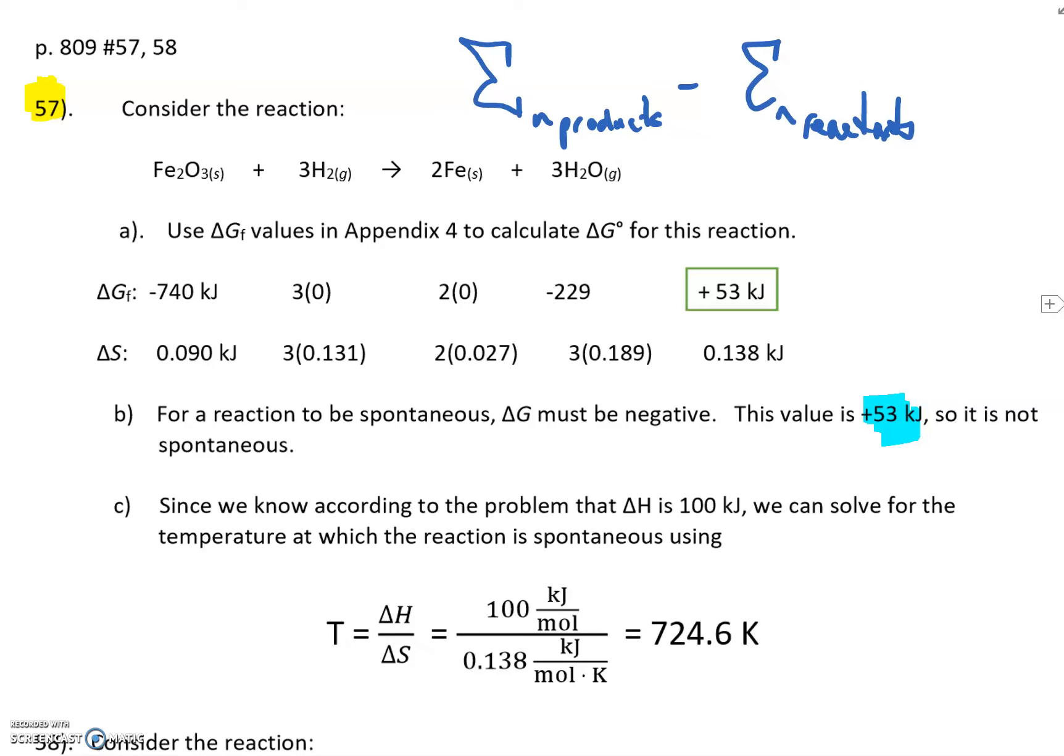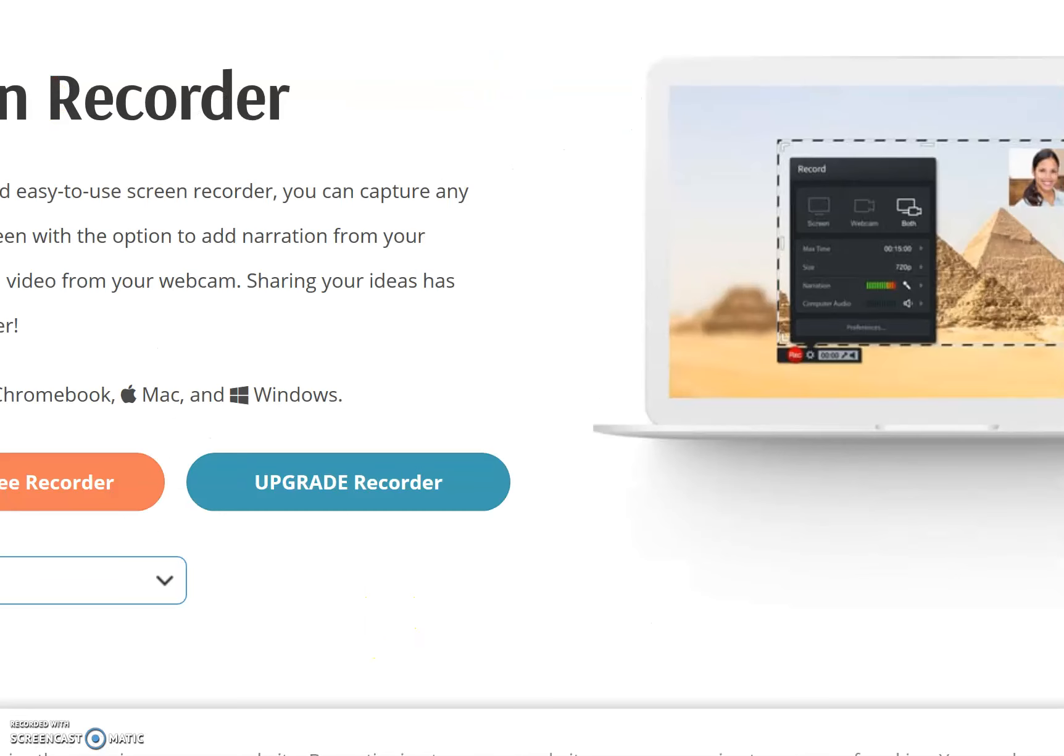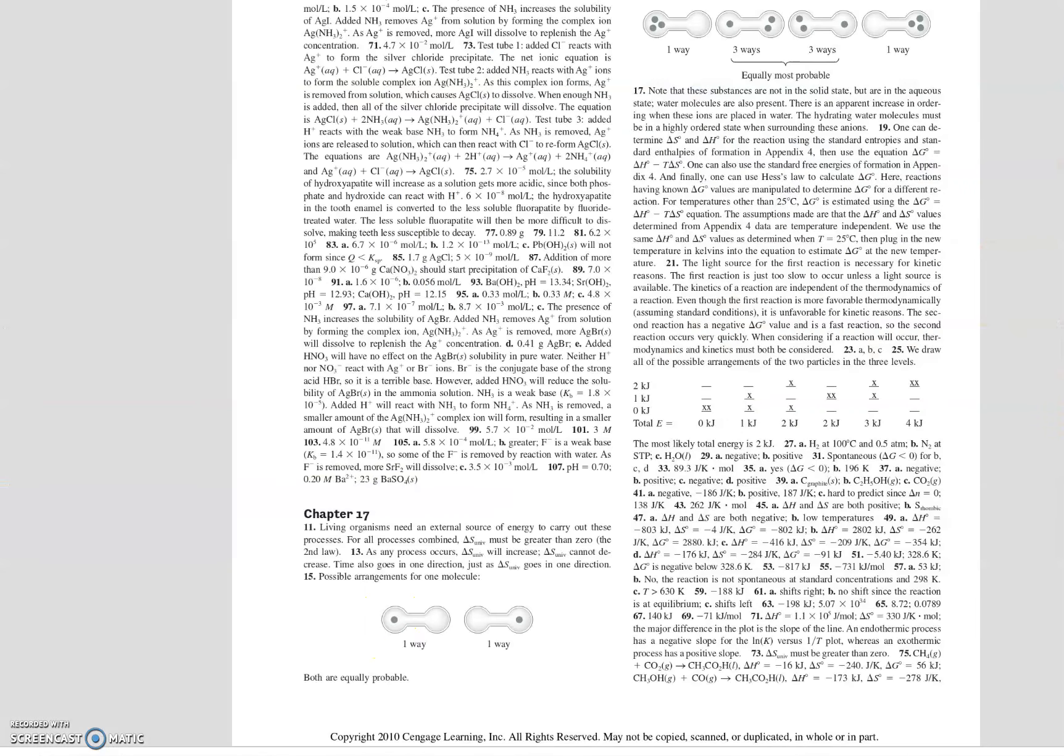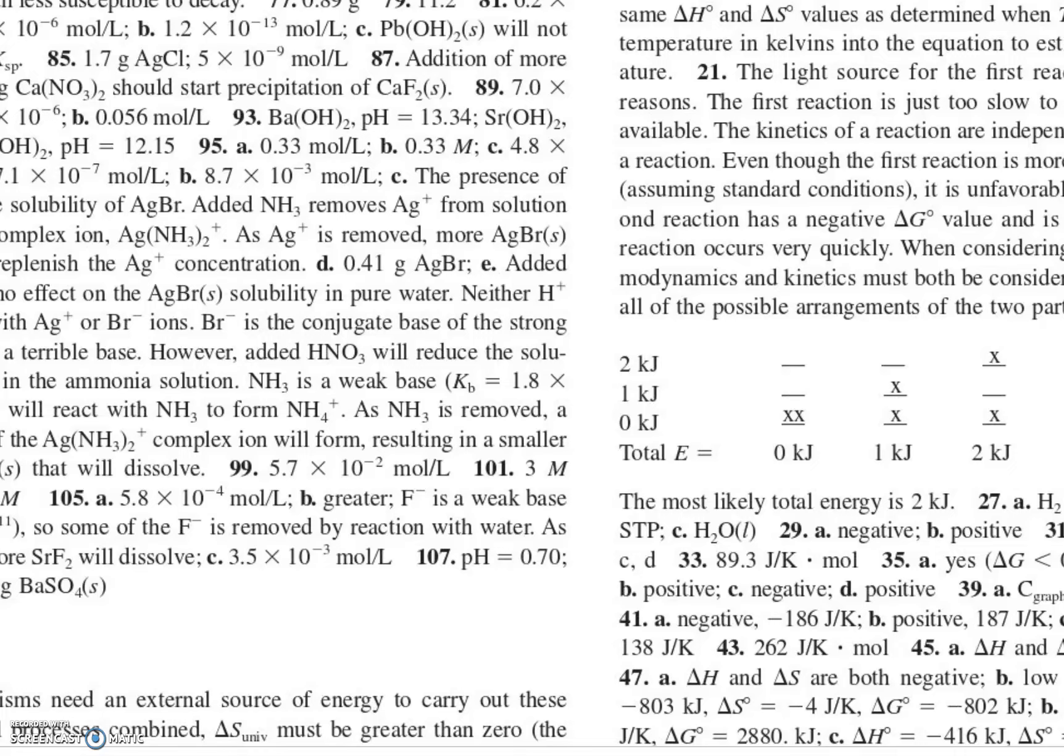So, flipping this equation around to find the temperature at which or above delta G will be less than or equal to 0. I'm using this version of the equation. T is equal to delta H over delta S plugged in everything, and I got a value of 724.6 kelvins. Now, that sounds valid, but if you look in the answer key at the back of the text, it says, so let me do this.